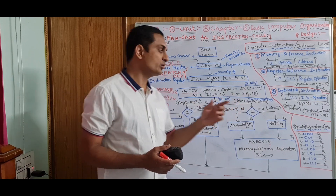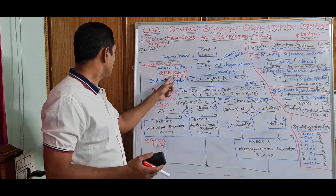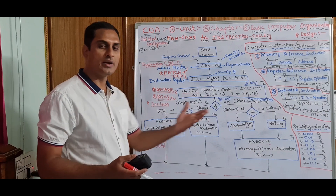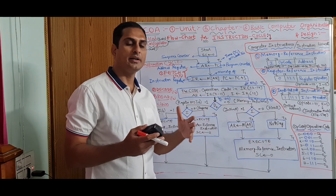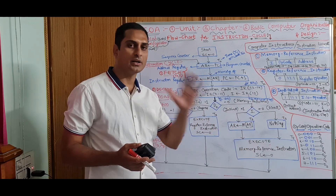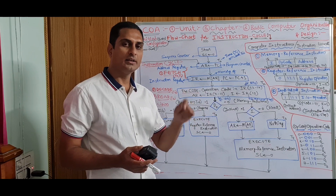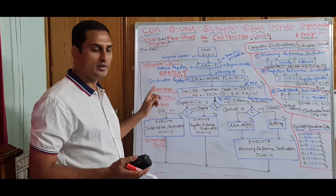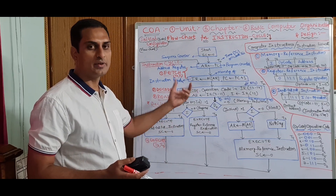In my previous video also, I told you: instruction cycles, we have four — Fetch, Decode, Read, and Execute. We need to fetch the instruction from memory, because instructions and code are in the memory. We need to execute; that is done by the control unit with the processor. We fetch, decode, read, and execute. The same thing will be done with the flowchart we are explaining.